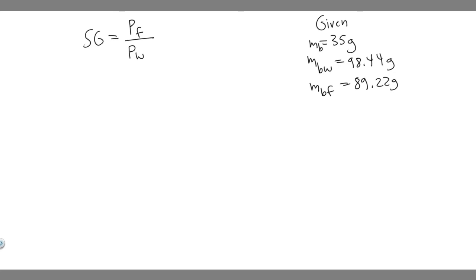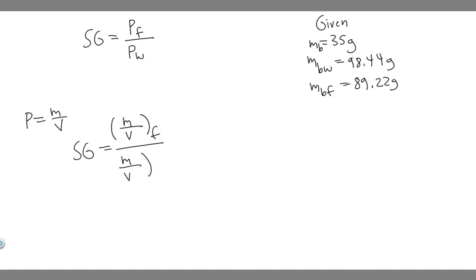In order to solve this, you should know the formula that relates density with mass and volume: density equals mass over volume. So specific gravity equals (M/V) of the fluid over (M/V) of the water. Now, we don't have the volume, but notice it's the same bottle — so the volumes of the water and the fluid are exactly the same, meaning they cancel. You're really just left with the mass of the fluid over the mass of the water.